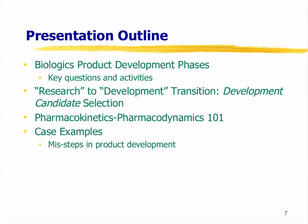Once you actually have a clinical candidate, then you move forward. There are some key questions that need to be asked and certain activities that need to be done. I'll describe the studies involved in animal work — pharmacokinetics and pharmacodynamics — and show you case examples of some missteps, things that are sometimes forgotten or not well understood early on because the discipline is not well understood to a number of early investigators.